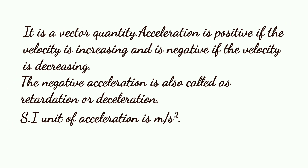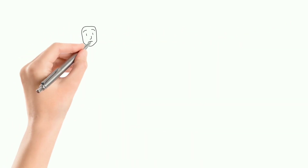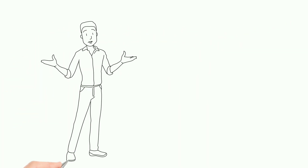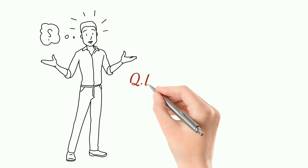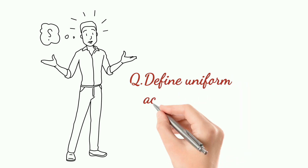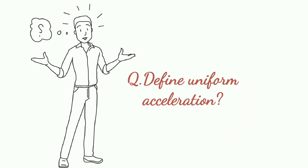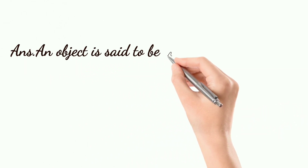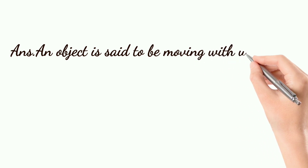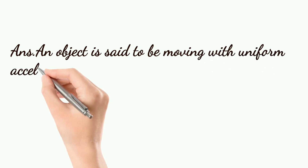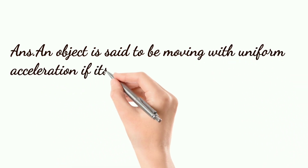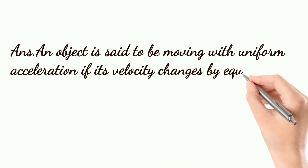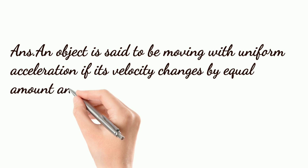Define uniform acceleration. An object is said to be moving with uniform acceleration if its velocity changes by equal amounts in equal intervals of time.